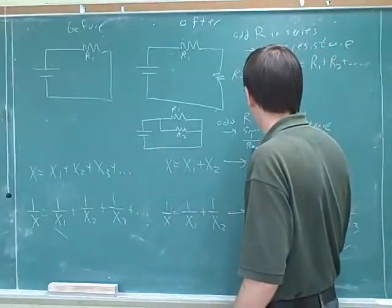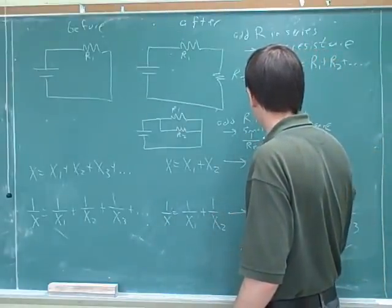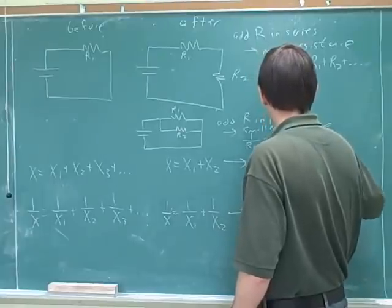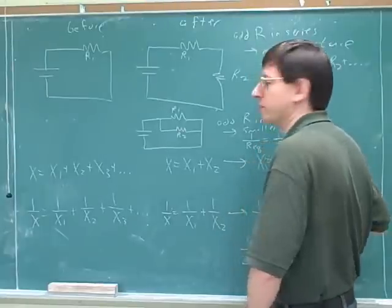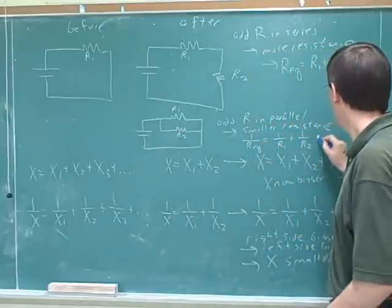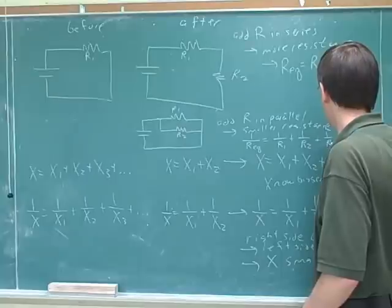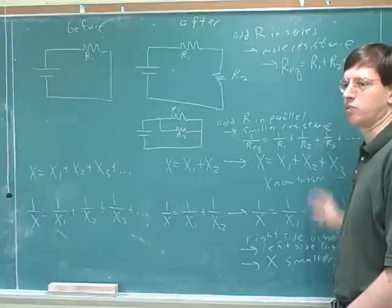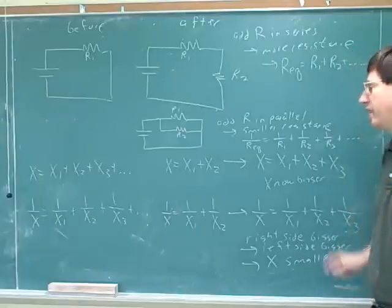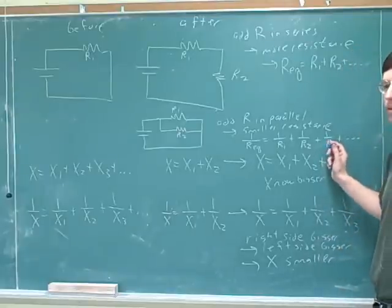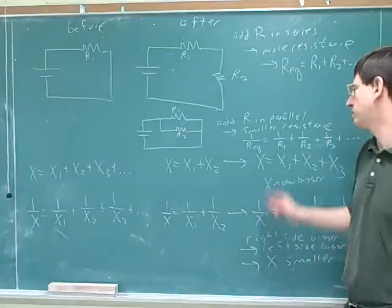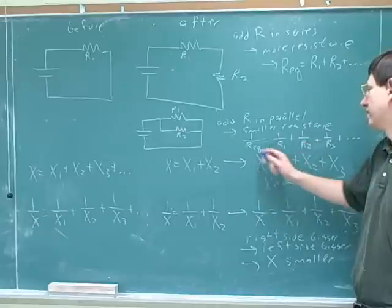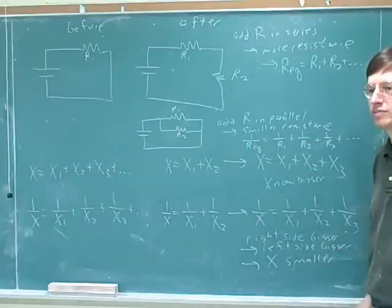So we would have 1 over R-equivalent equals 1 over R1 plus 1 over R2 for two devices. If there were three devices, it would be plus 1 over R3. If there were four devices, you'd add 1 over R4 — you add as many reciprocals as you need. In this particular case, we'd have 1 over R1 plus 1 over R2 equals 1 over R-equivalent.